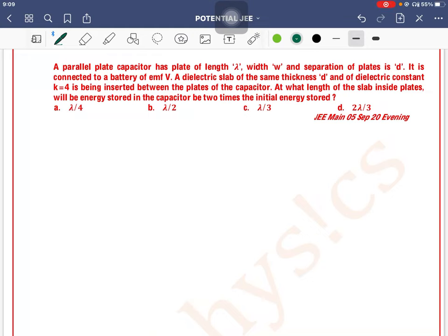A parallel plate capacitor has plate of length lambda and width W, and separation of plates is D. It is connected to a battery of EMF V. So you have a capacitor with length lambda and width W. The area is length into width, and the separation between both of them is D.